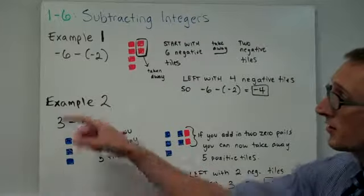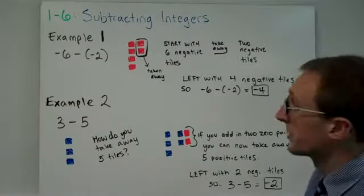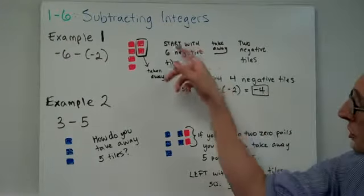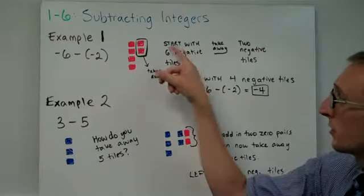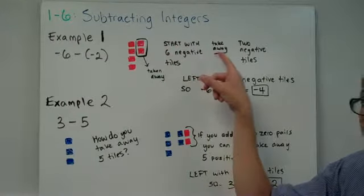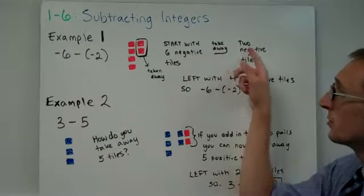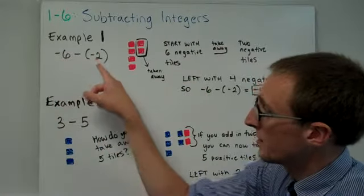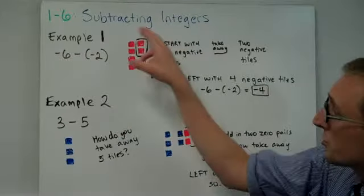All right, so example 1, let's say we have negative 6 minus negative 2, this time we are subtracting. So what does that mean? Well, it means that we're starting with 6 negative tiles, we're using tiles here, starting with 6 negative tiles, and subtraction means to take away. So we want to take away 2 negative tiles. Negative 6 tiles, take away negative 2 tiles, or 2 of those little negative tiles. So I've illustrated that here.